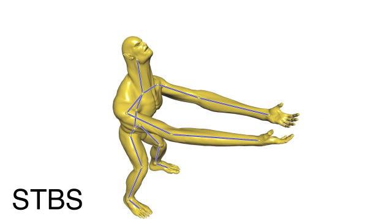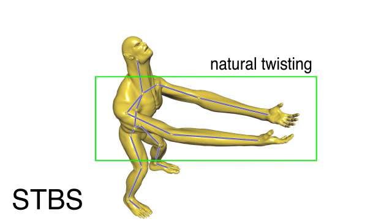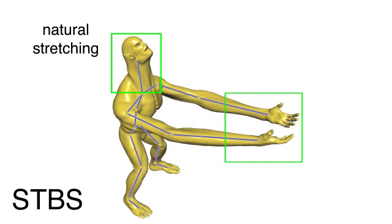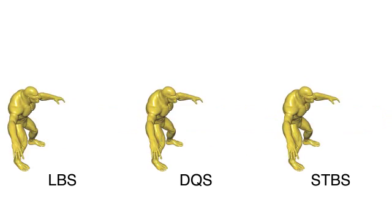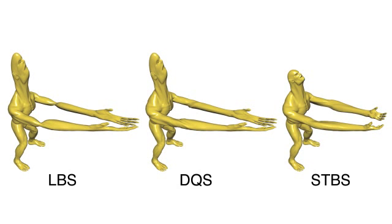We present stretchable, twistable bones. We derive a simple modification of the linear blend skinning and dual quaternion skinning formulations. Our formulation only requires an additional set of weights for each bone, which we call endpoint weights as they reveal correspondences between the shape and the endpoints of each bone. Deformation computation remains embarrassingly parallel, and the extra storage and computation costs are minimal.